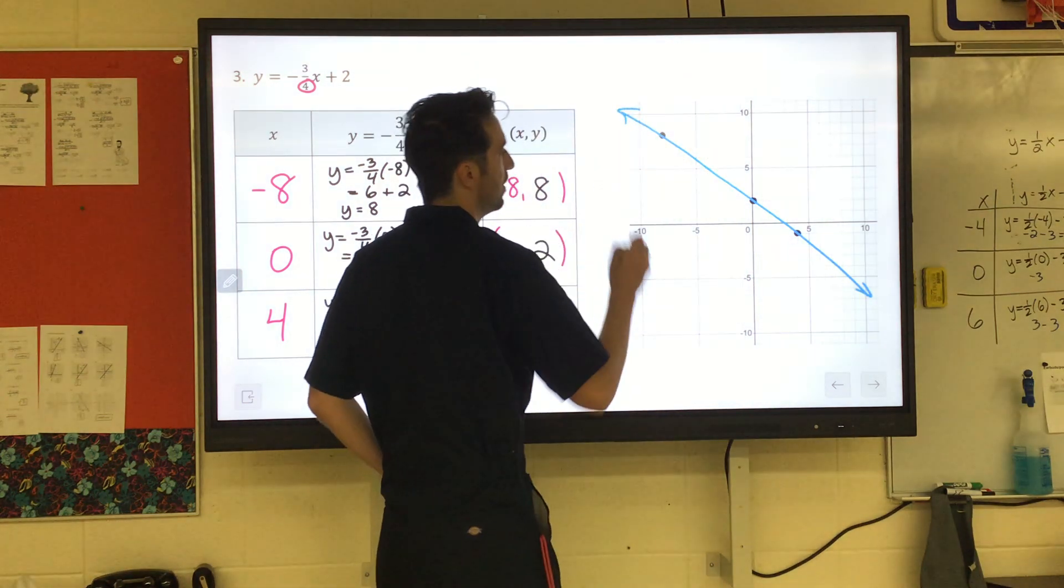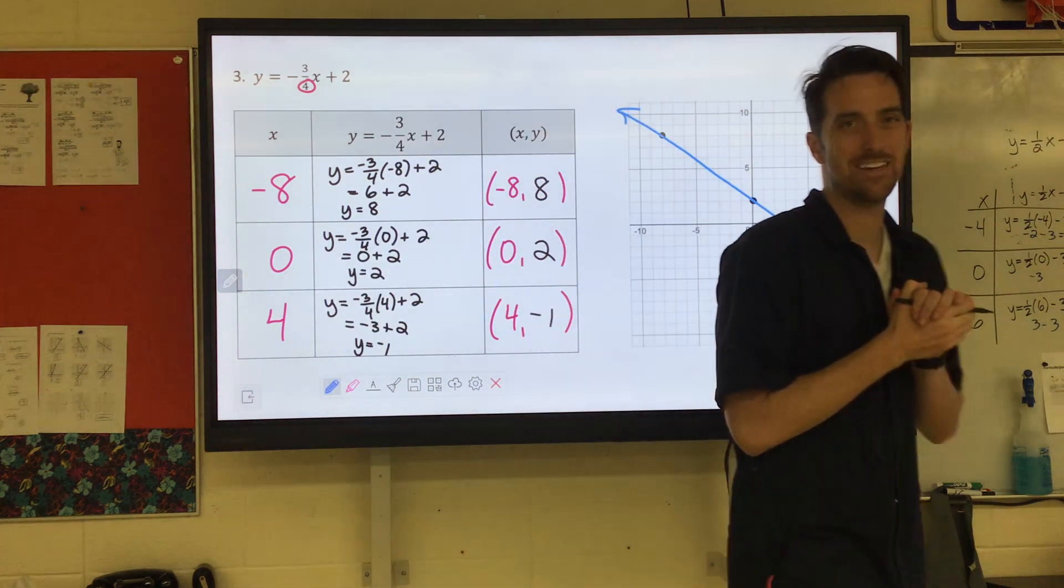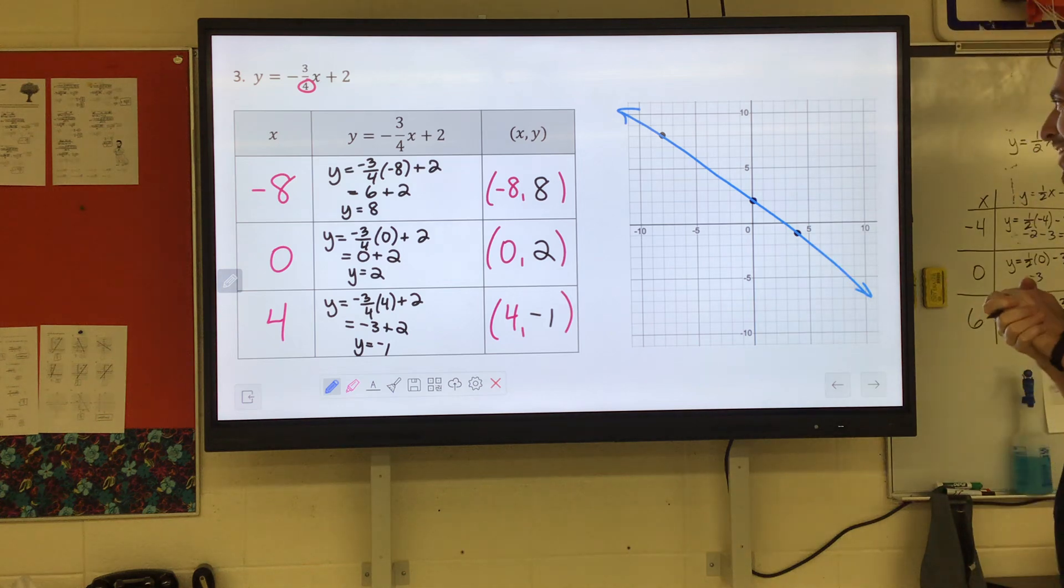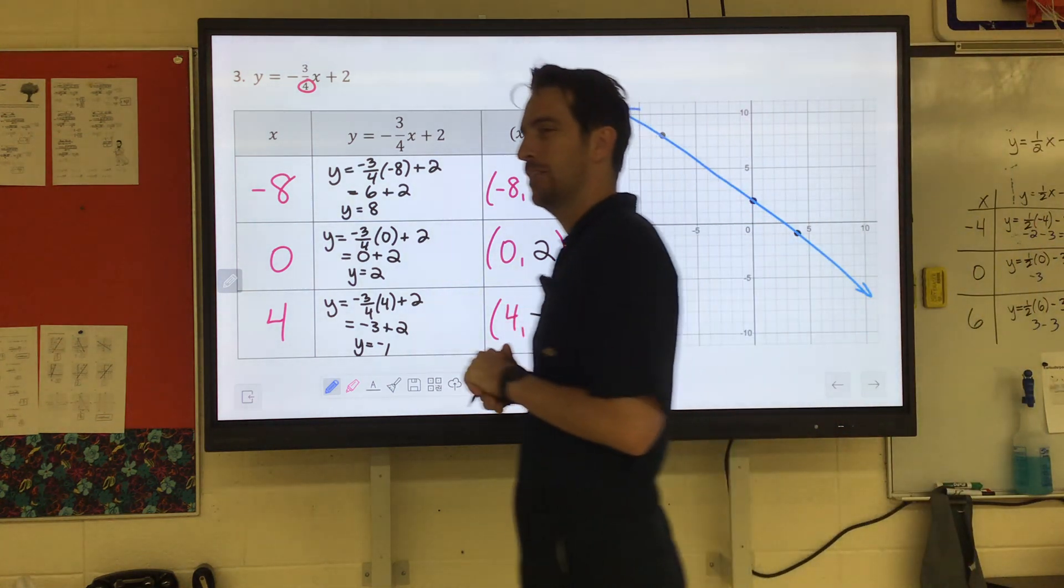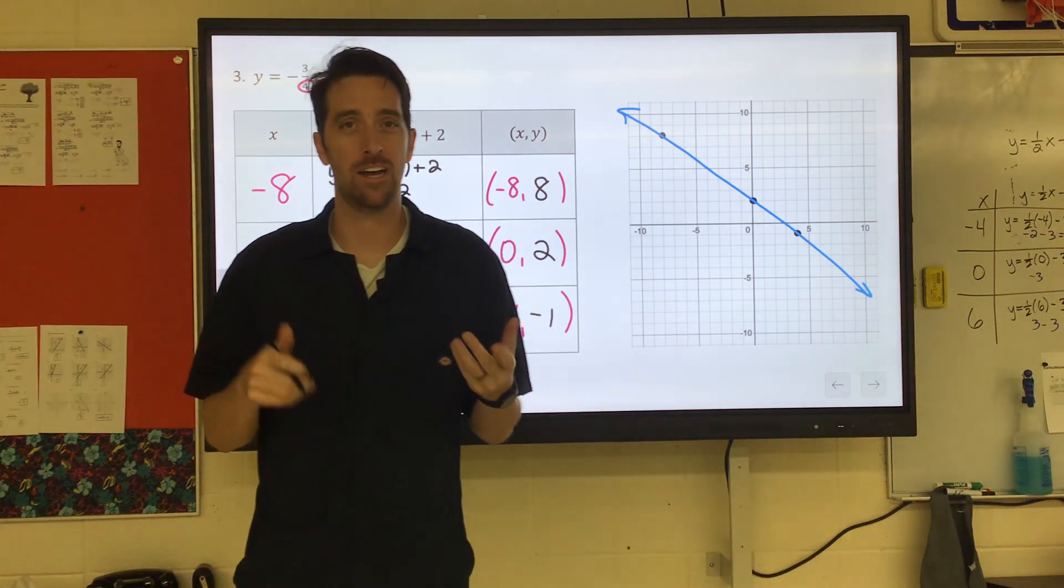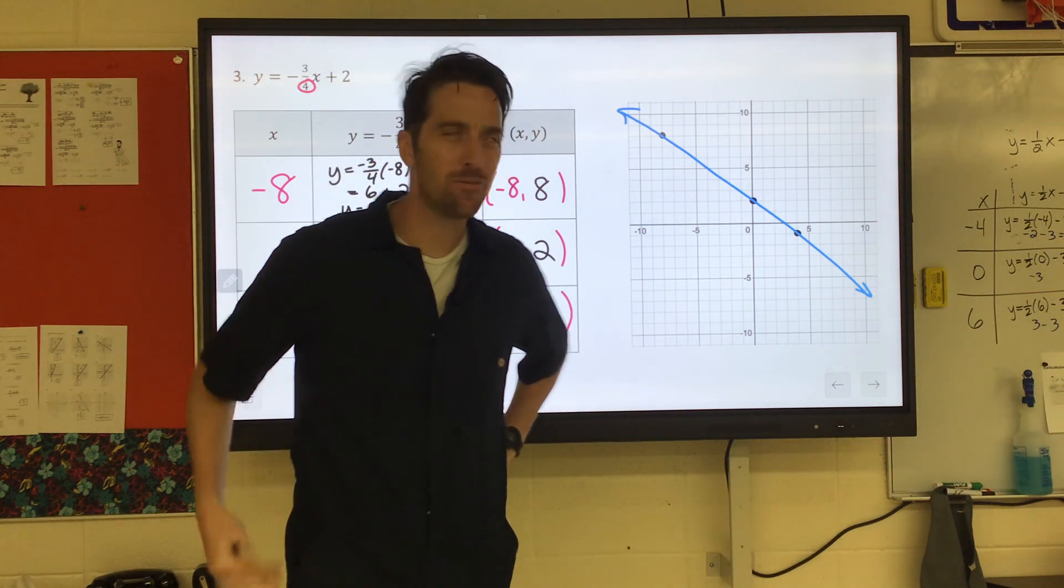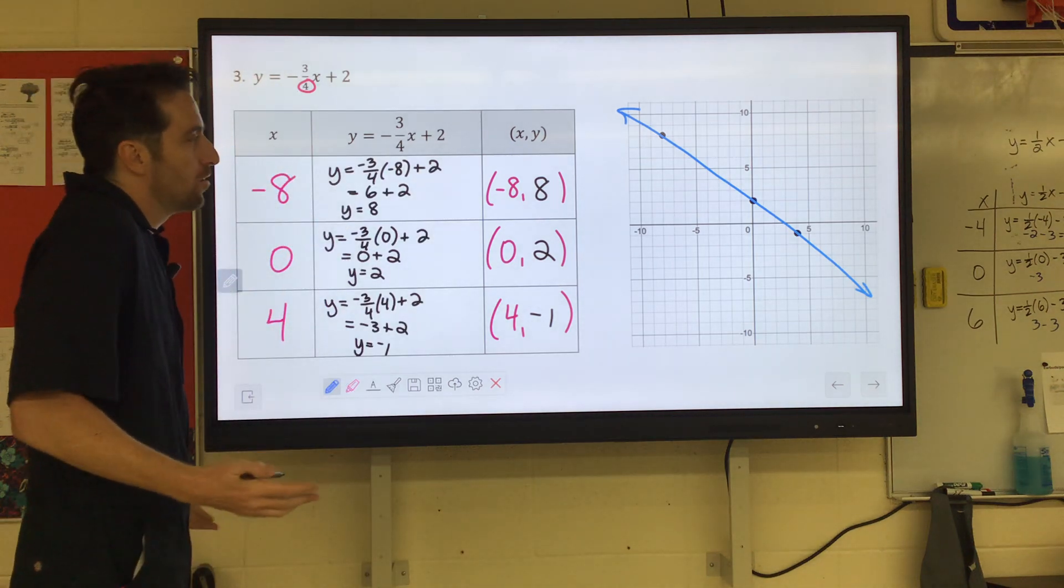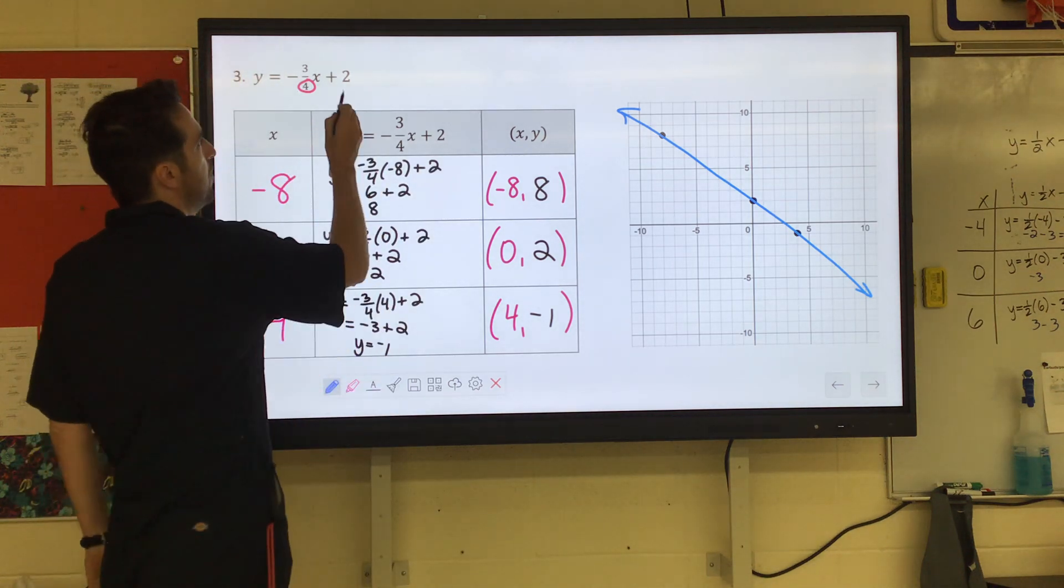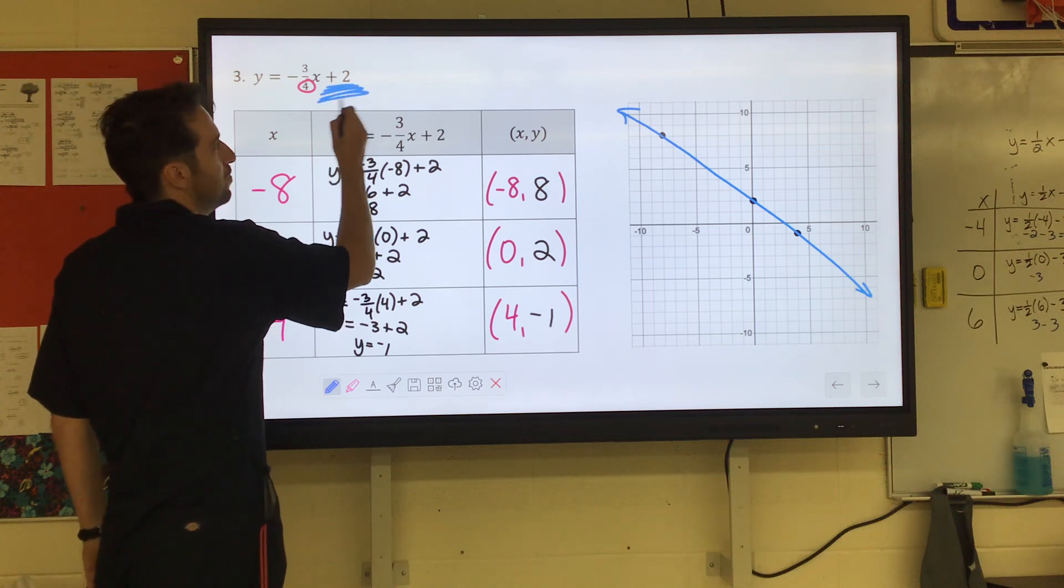Look at us graphing using the table method. That was so much fun. Oh, if only there were a faster way that we can graph an equation like that. Oh, you mean like slope intercept form? That's in slope intercept form.